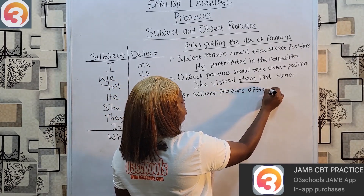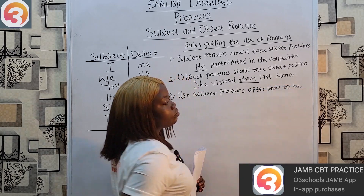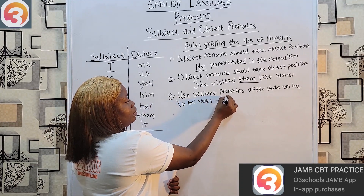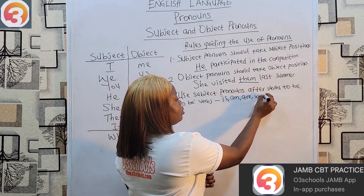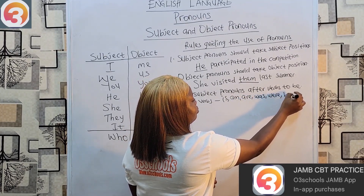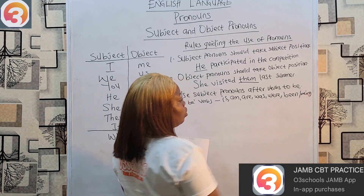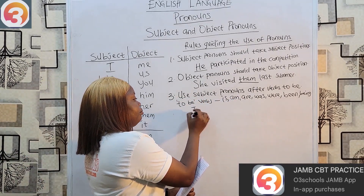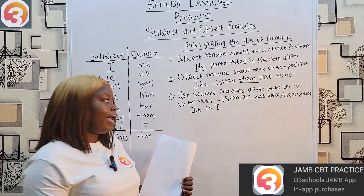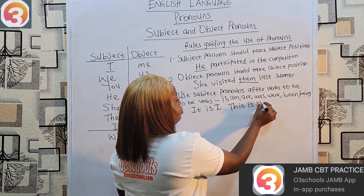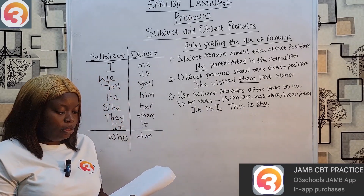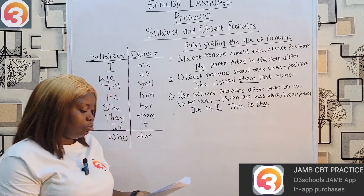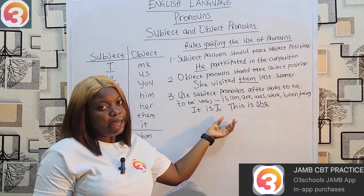Rule three: use subject pronouns after the verb 'to be.' Verbs to be include: is, am, are, was, were, been. You must use subject pronouns after these verbs. For example: 'It is I' — not 'It is me.' 'This is she' — not 'This is her.' So after verbs to be, we use the subject form of the pronoun.